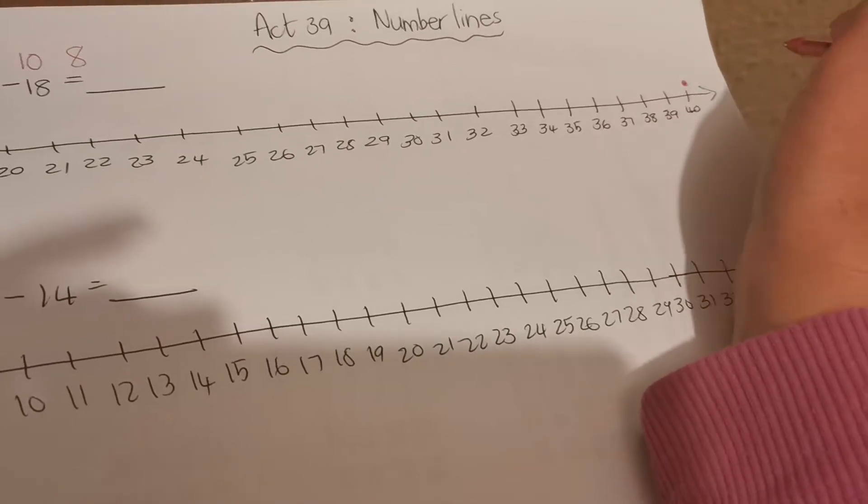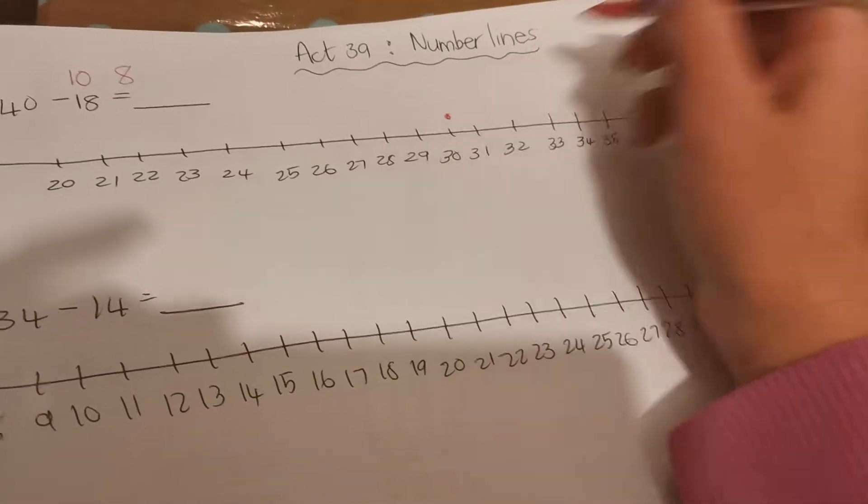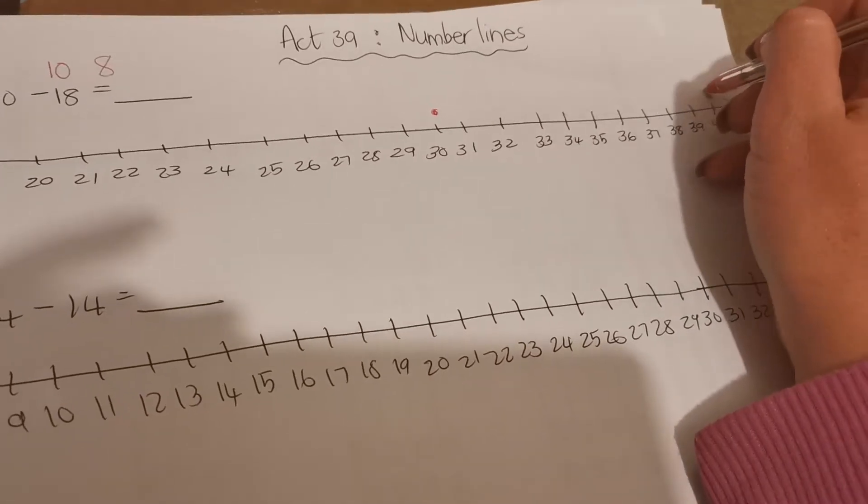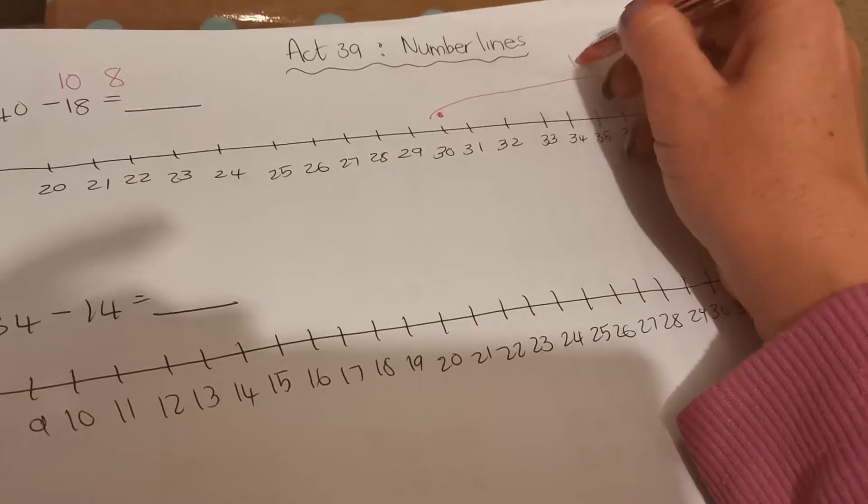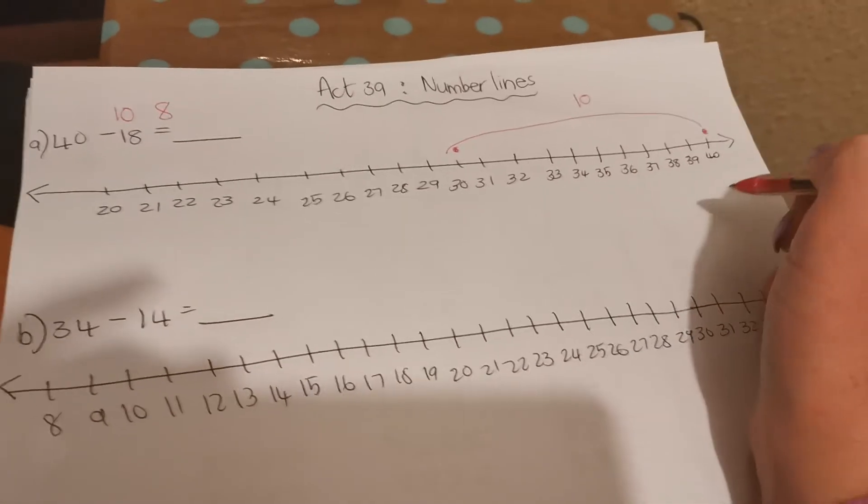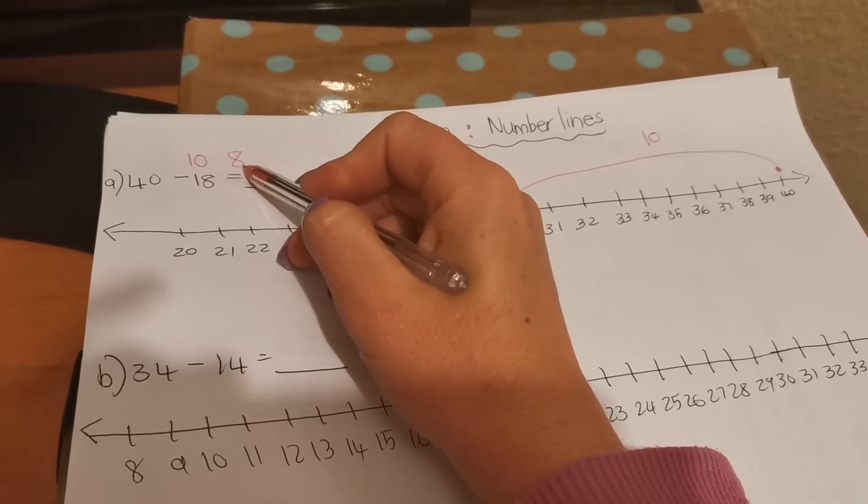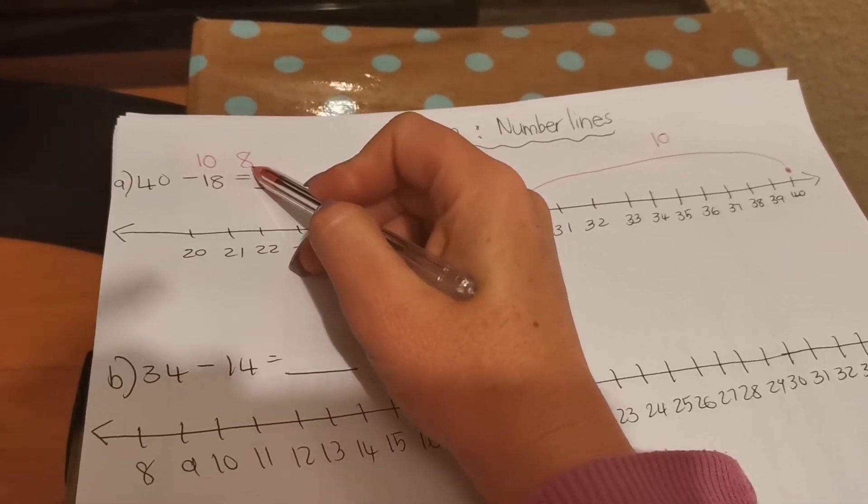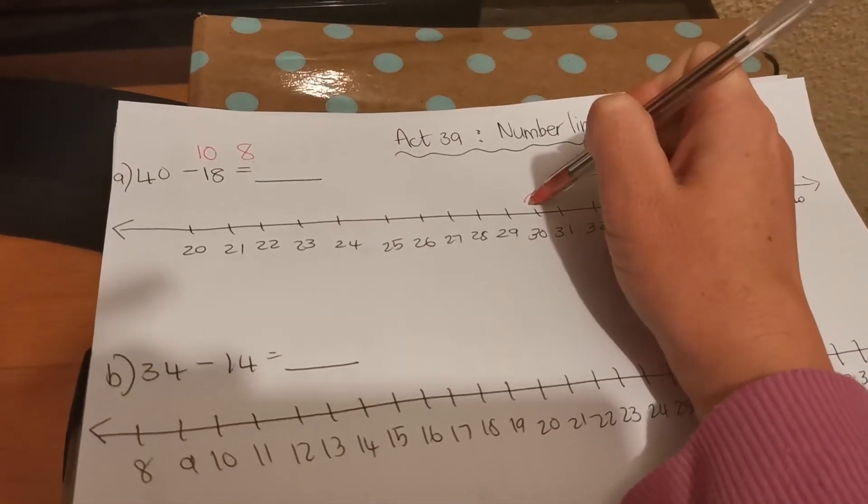So make a dot on top of 40 and you know that if you take away 10, it will be 30. So that you can bounce from 40 until 30. Then you took away 10. Now you have to take away 8. So remember 8 is units, so you're going to count in ones. So you're going to jump 8 times starting by 30.